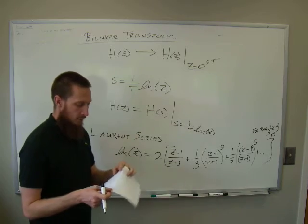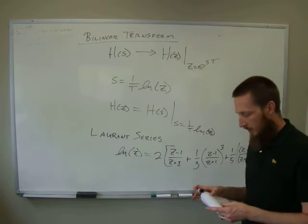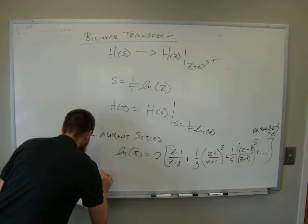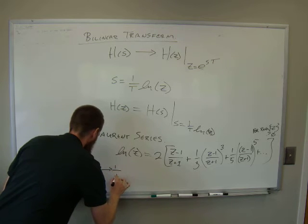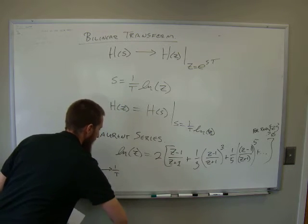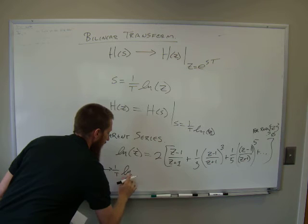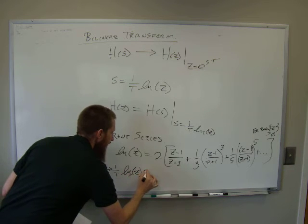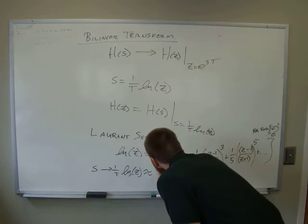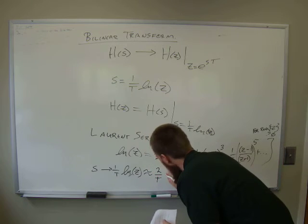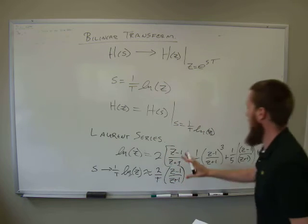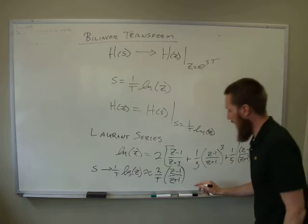Engineers are always one for saying that's pretty much close enough. So we cut this down and say S is going to go to one divided by T times the natural log of Z, which is approximately equal to two divided by T times the quantity Z minus one divided by Z plus one — and forget the rest of this series expansion. This is close enough.